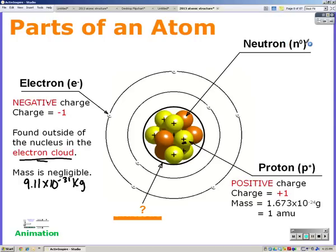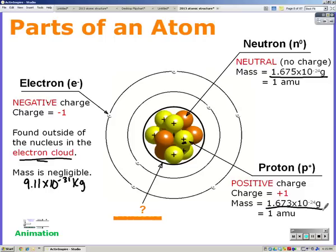The other particle in the center is a neutron. Neutrons are neutral, as in no charge, and the mass is roughly the same as a proton, which is 1.675 times 10 to the negative 24th grams, or 1 amu. The center of the atom is termed the nucleus. And so our nucleus has protons and neutrons. So what do you think the charge of the nucleus is? We have positive and no charge, so if you said positive, then you are correct.